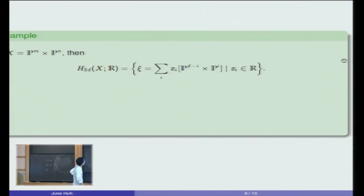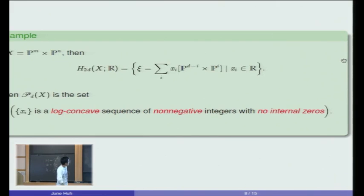If you start with product of two projective spaces, then by the Künneth theorem, you can decompose any one-dimensional piece in this form, using the canonical basis consisting of product of linear spaces. Homology classes in this case is simply a sequence that I write X_i. The space of primes in this case is exactly this set. The condition on the coefficient X_i, so that the corresponding homology class is prime, there are three conditions: one is log-concavity, the second is non-negativity, and the third is the no internal zero condition.